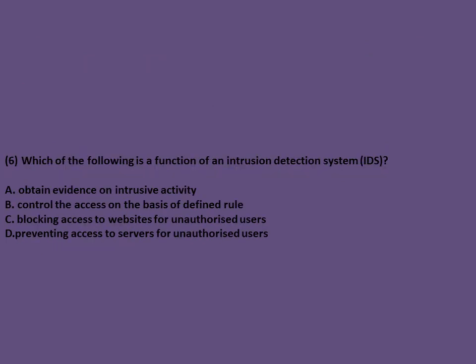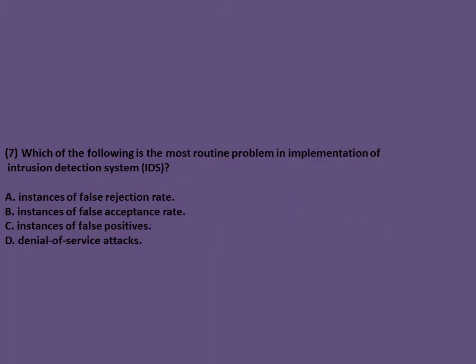Exam question: Which of the following is a function of IDS? The answer is to obtain evidence on intrusive activity. The other options are features of a firewall. The most routine problem in implementation of IDS is instances of false positives. Options A and B in another question are for biometrics.